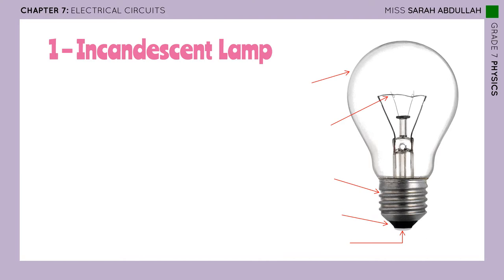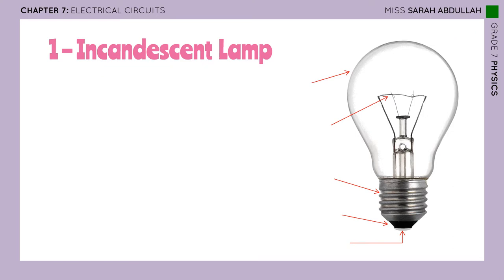We are starting with the incandescent lamp, which is this lamp right here. It is basically a light bulb we have in our homes. Not all light bulbs are incandescent lamps, so you have to know its components to tell whether the light bulb in your room is an incandescent lamp or not. Starting with the shell — it is called the glass bulb because it is made of glass. And then you have this wire right here.